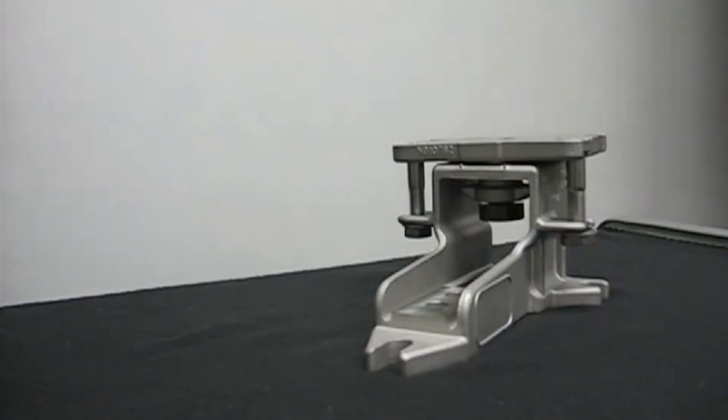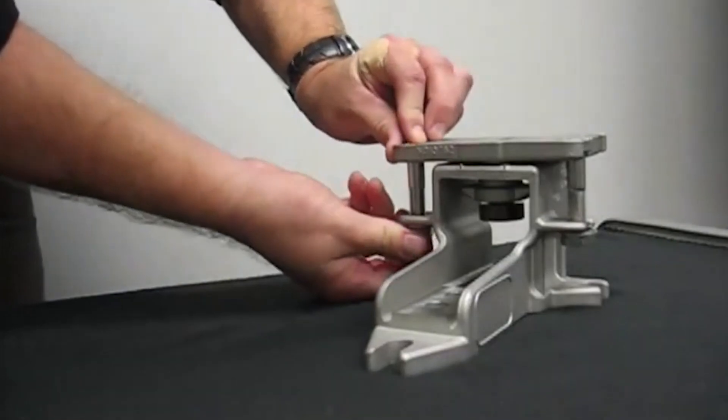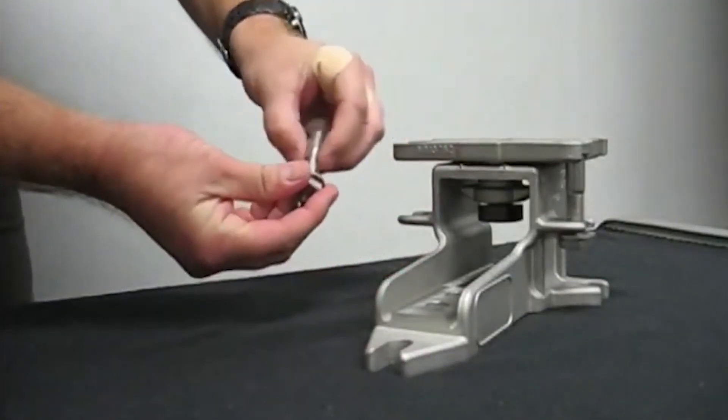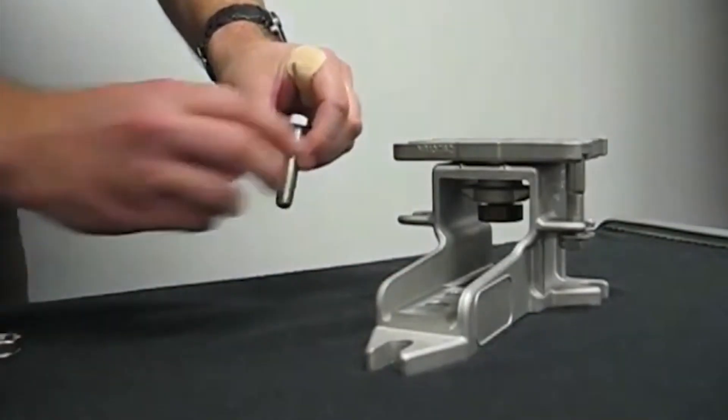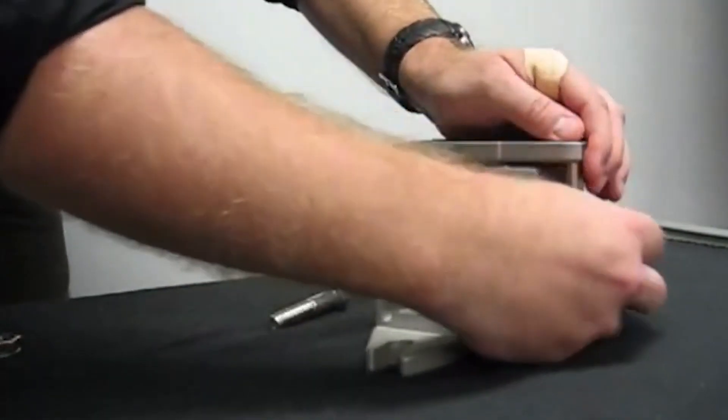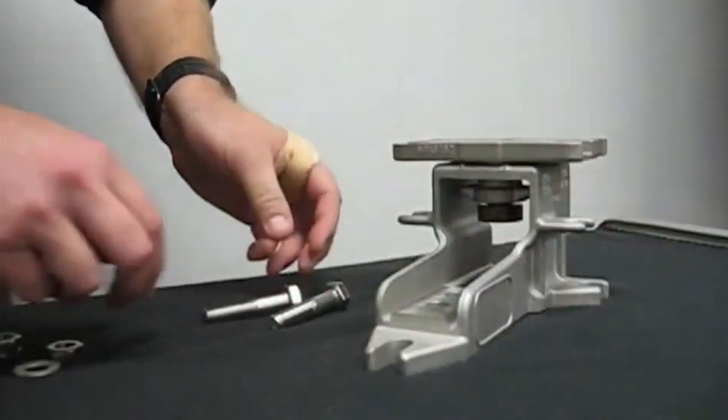The technician then removes the bolts from the side. These bolts will be used again, but the nut and washers won't. They are just to help with location. The bolts are removed.